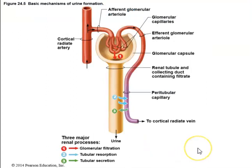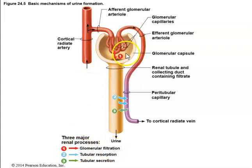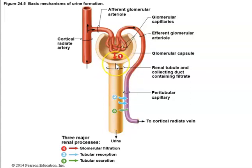The nephron produces urine through filtration, resorption, and secretion. At the glomerulus and the Bowman's capsule — together called the renal corpuscle — glomerular filtration occurs. Filtrate leaves the glomerulus and enters the renal tubule, specifically the proximal convoluted tubule. The proximal convoluted tubule is directly associated with the glomerular capsule and is where resorption of the filtrate begins.